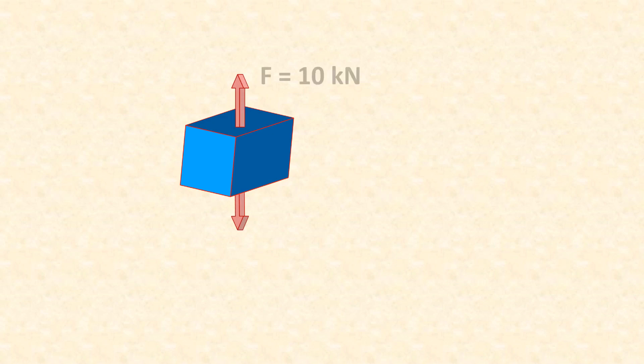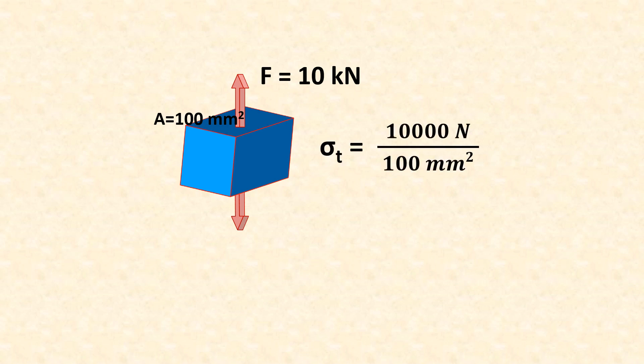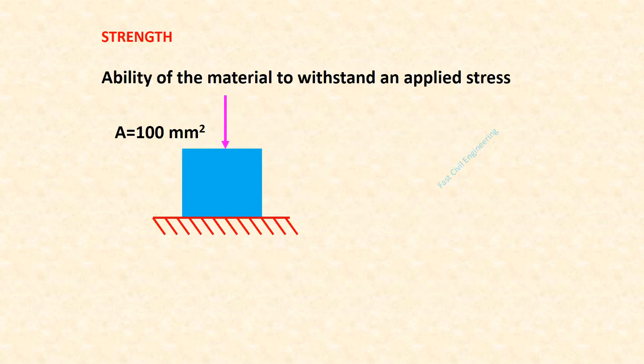See this example: tensile force is 10 kN, area is 100 mm². Then tensile stress sigma-t is equal to 100 N/mm², or 100 MPa. Strength is the ability of a material to withstand applied stress — generally the maximum stress withstood without failure.